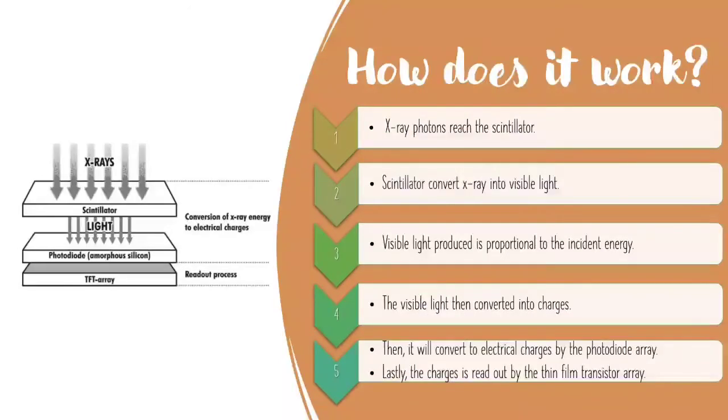So how does it work exactly? First, the x-ray photons reach the scintillator. The scintillator then converts x-ray into visible light. Visible light produced is proportional to the incident energy. The visible light is then converted into charges, then converted to electrical charges by the photodiode array. Lastly, the charges are read out by the thin film transistor array, or TFT.